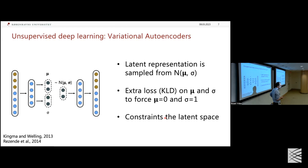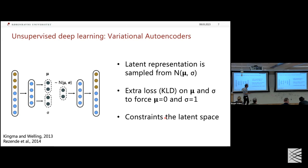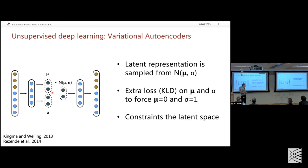The loss function has two main parts: the difference between input and output — the reconstruction loss — and a loss on the latent distribution enforcing it to follow a certain distribution, typically a Gaussian, using the KL divergence. You can enforce other distributions as well. The KL divergence term is scaled down so the latent space is constrained but not over-constrained.